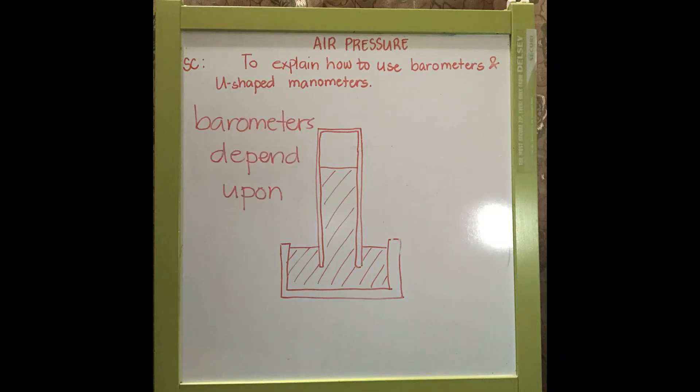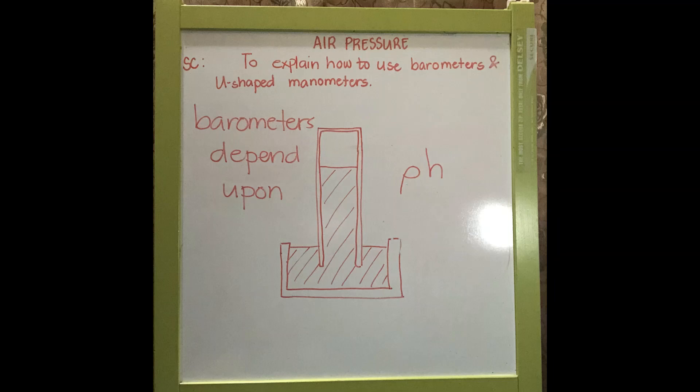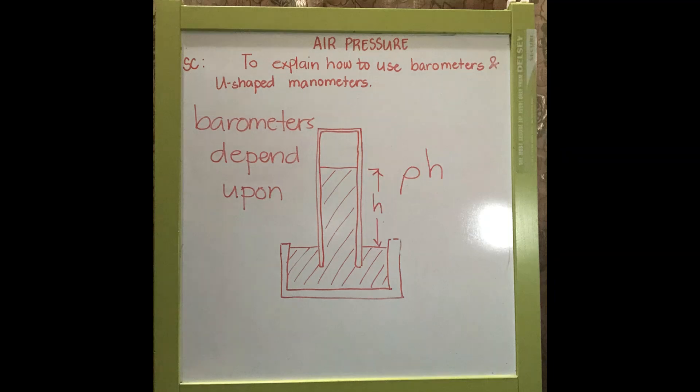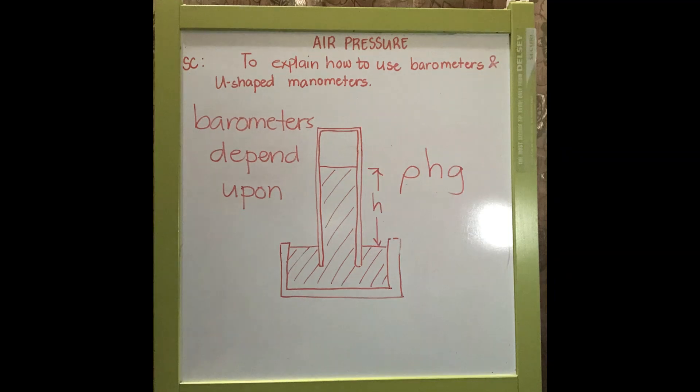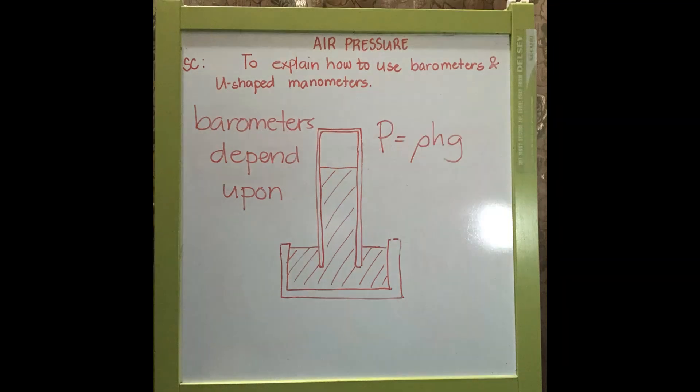All barometers depend on the density of a liquid used, the height of the liquid in the cylinder, and the gravitational field strength which is always equal to 10 newton per kilogram. So, P is equal to rho Hg.